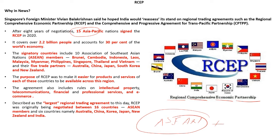The main purpose of RCEP is to make it easier for products and services of each member country to be traded across the region. The agreement also includes rules on intellectual property, telecommunication, financial and professional services, and e-commerce. The 15 RCEP nations together cover 2.2 billion people and account for 30 percent of the world economy. RCEP is described as the largest regional trading agreement at present.